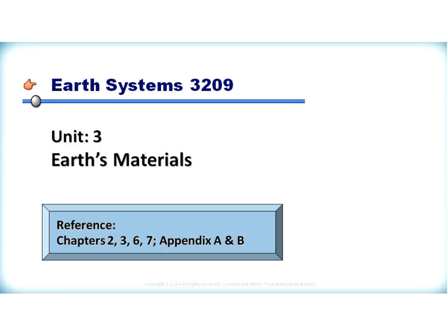Earth Systems 3209, Unit 3, Earth's Materials. Reference can be found in Chapters 2, 3, 6, 7, Appendix A and B of the Curriculum Guide.